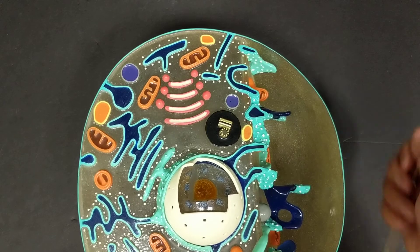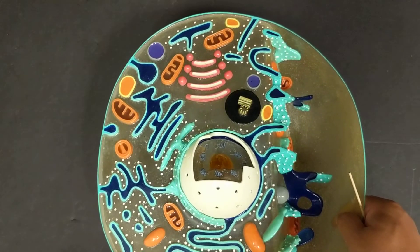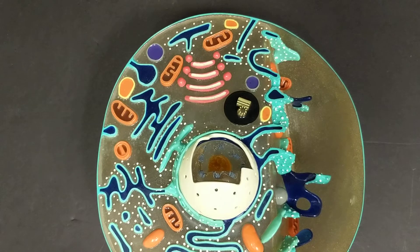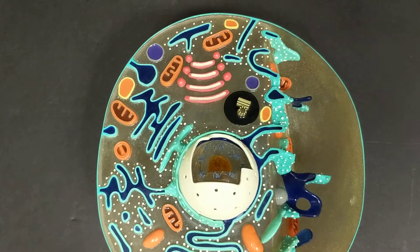So once again, that is the cell. But as you can see, it looks different from each model. Make sure that you're studying each of the model pictures and finding all of the structures from your structure list in order for you to be able to identify all these different things from any of the given models.